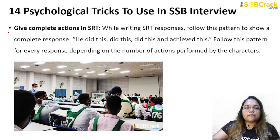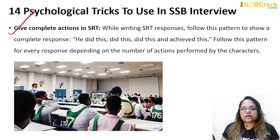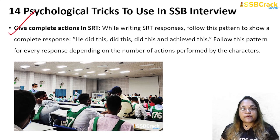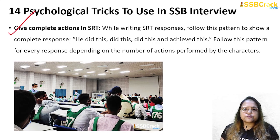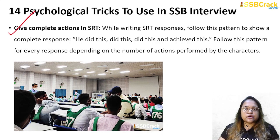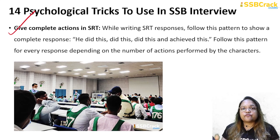The next trick is to give complete actions in SRT. In the psychological tests of the second stage — which includes TAT, BAT, SRT, and SDT — for SRT responses you have to follow this pattern: 'He did this, did this, did this, and achieved this.' You must follow this complete-action pattern for every response in SRT, depending on the number of actions performed by the character.